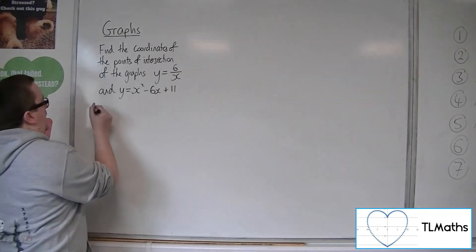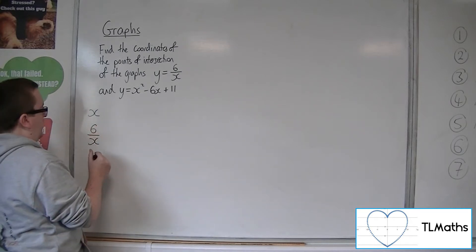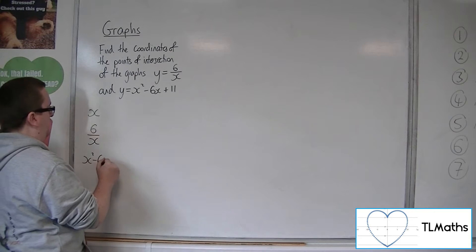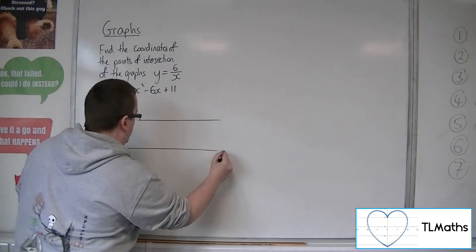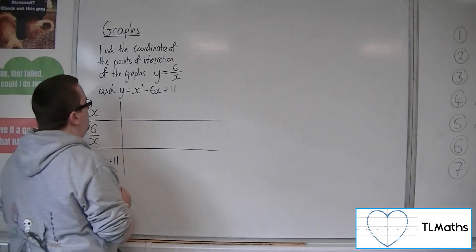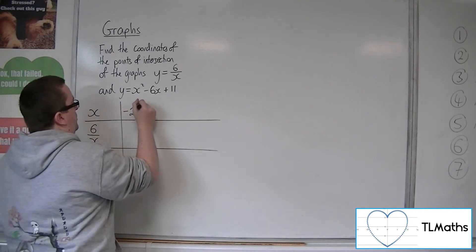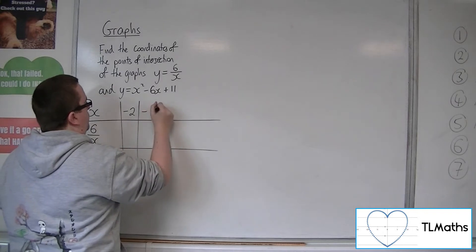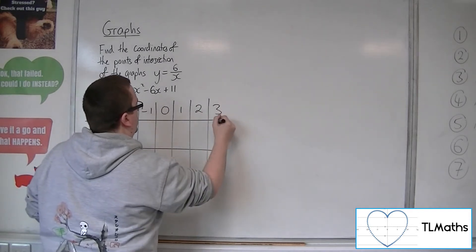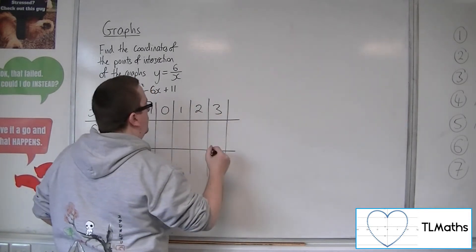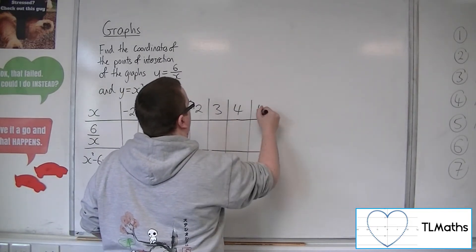So let's first choose some points to work with. Let's have some x's and some y's. So we're going to need some 6 over x's and we're going to need some x squared minus 6x plus 11. So let's start off with just doing things like minus 2, minus 1, 0, 1, 2, 3, let's go a couple more, 4 and 5.